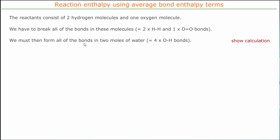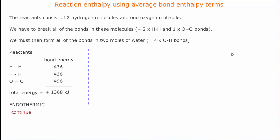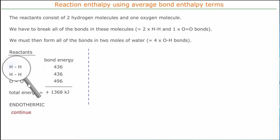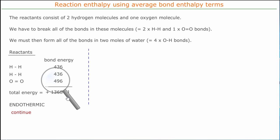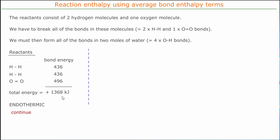Then we must form all of the bonds in two moles of water, which is four O-H bonds. On the left hand side we're breaking two H-H bonds — because there are two hydrogen molecules — and each one requires 436 kJ of energy. To break the oxygen-oxygen double bond requires 496 kJ. So the total energy to break bonds is 1368 kJ. This is an endothermic process: it's the energy required to break the reactants' bonds.